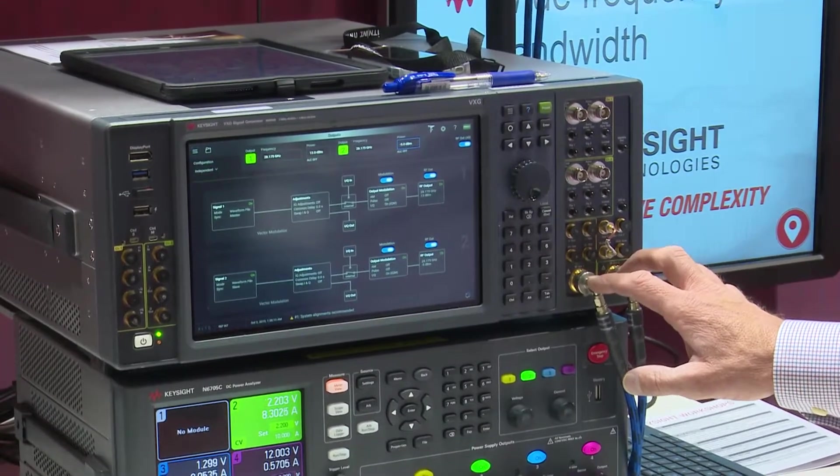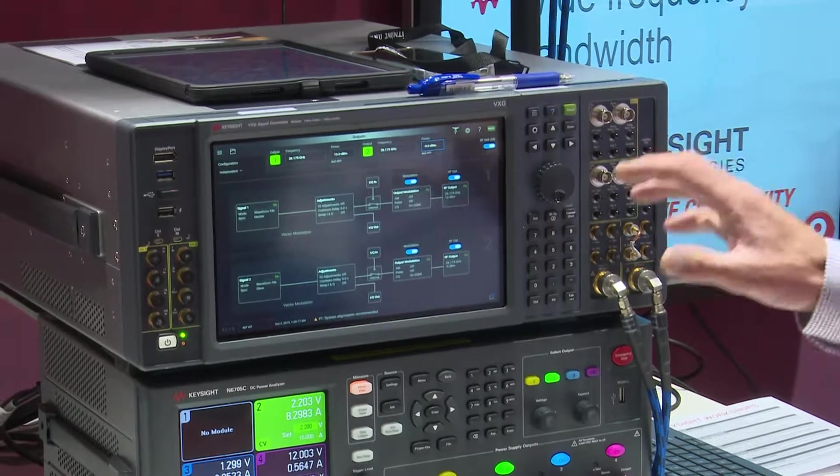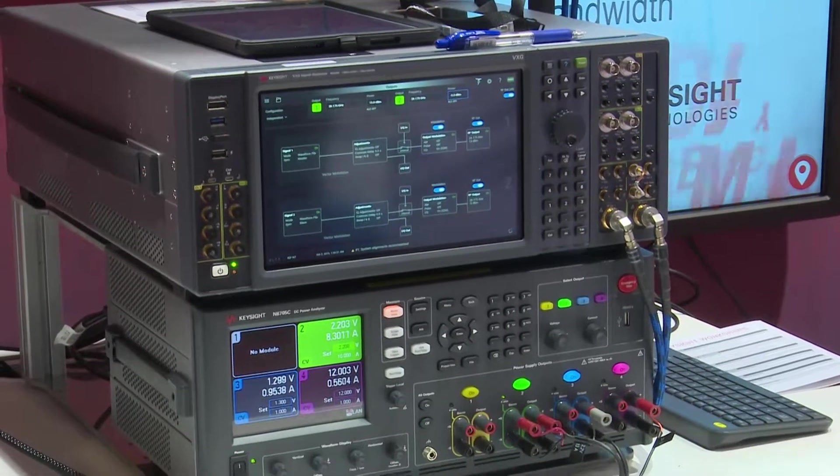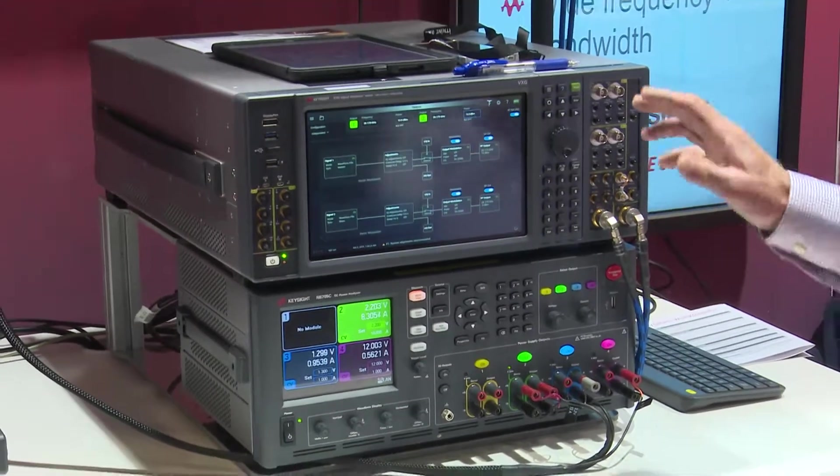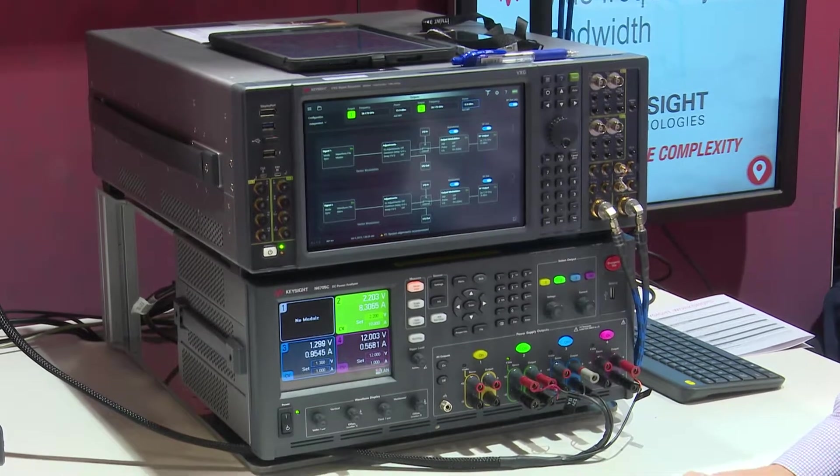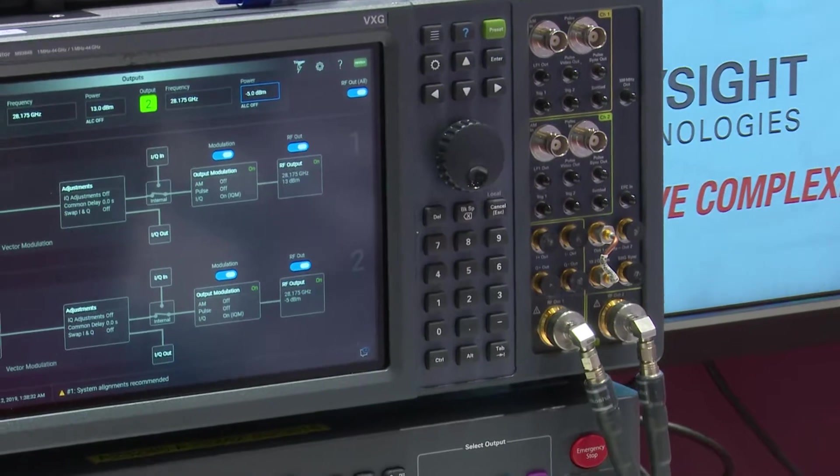Both channels can have 2 gigahertz of bandwidth, both channels have high power to overcome the OTA losses, and they have very low phase noise for the close new radio subcarrier spacing. And as a bonus they can also be phase coherent for doing work with phased array chipsets and other types of applications.